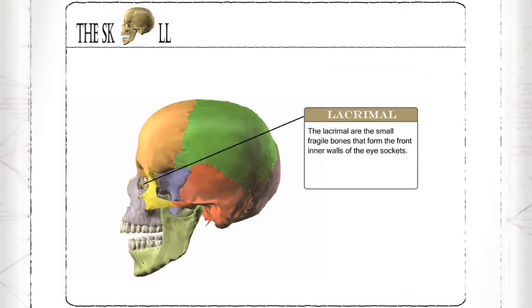Lacrimal: the lacrimal are the small fragile bones that form the front inner walls of the eye sockets.